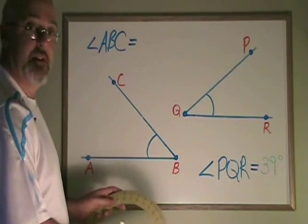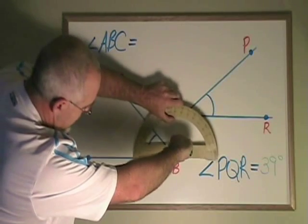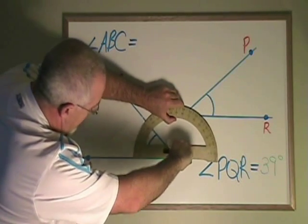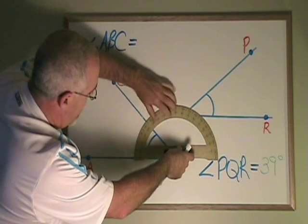Let's measure this angle. Putting the zero dot of the protractor on vertex B, and then making sure that the baseline goes across the bottom line that makes up my angle.